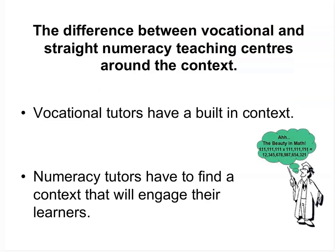The difference between vocational and straight numeracy teaching centers around the context. Vocational teachers have a built-in context and can use it to address the numeracy needs of their learners, because numeracy is already embedded in the context — it's simply a matter of identifying what embedded numeracy teaching needs to fit into those sessions or alongside activities. Numeracy tutors teaching straight numeracy have to find a context that will engage their learners and find out what will interest them, which can vary greatly.